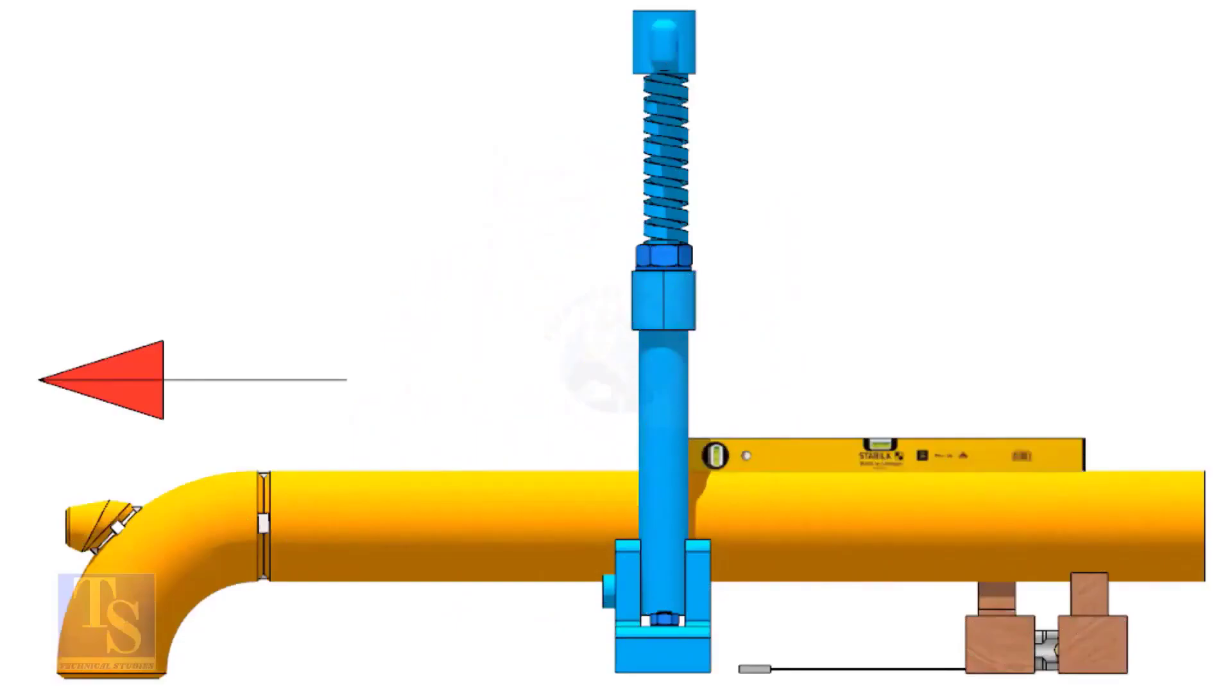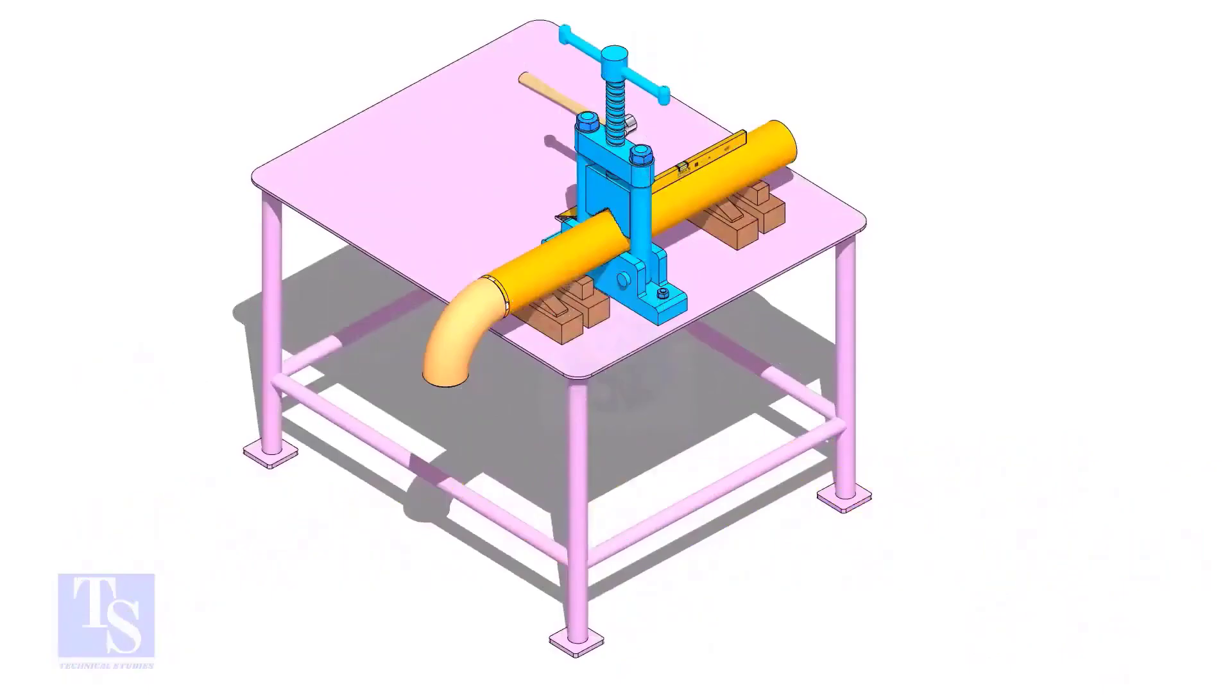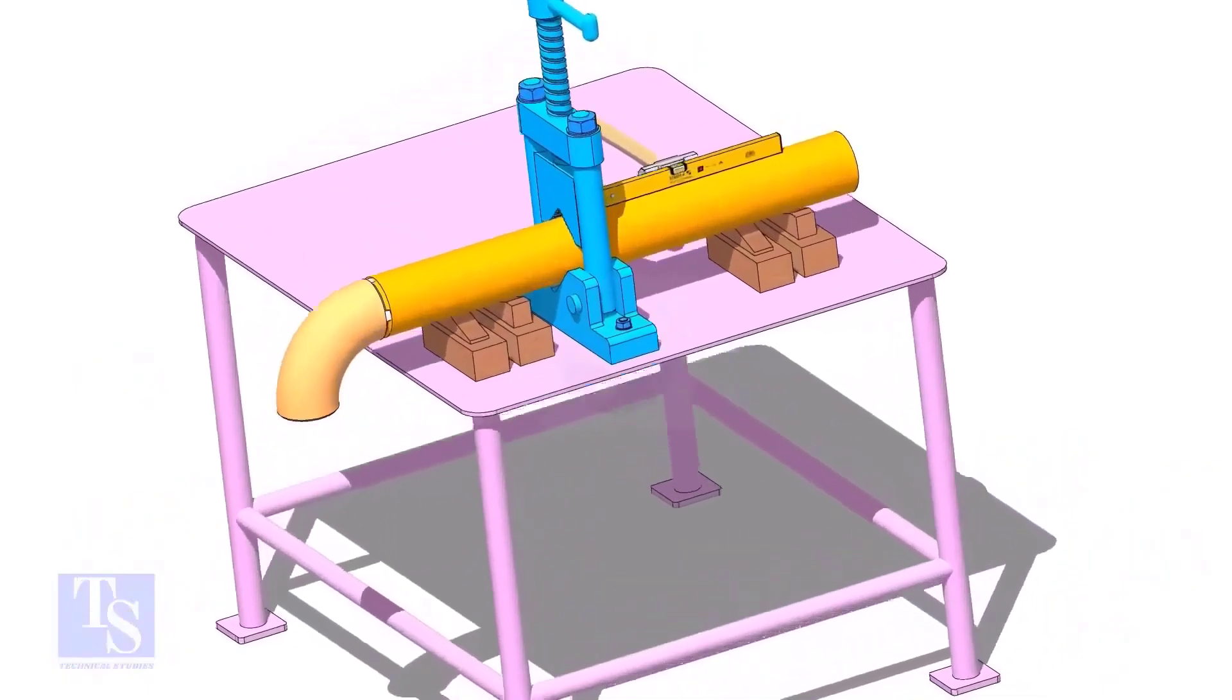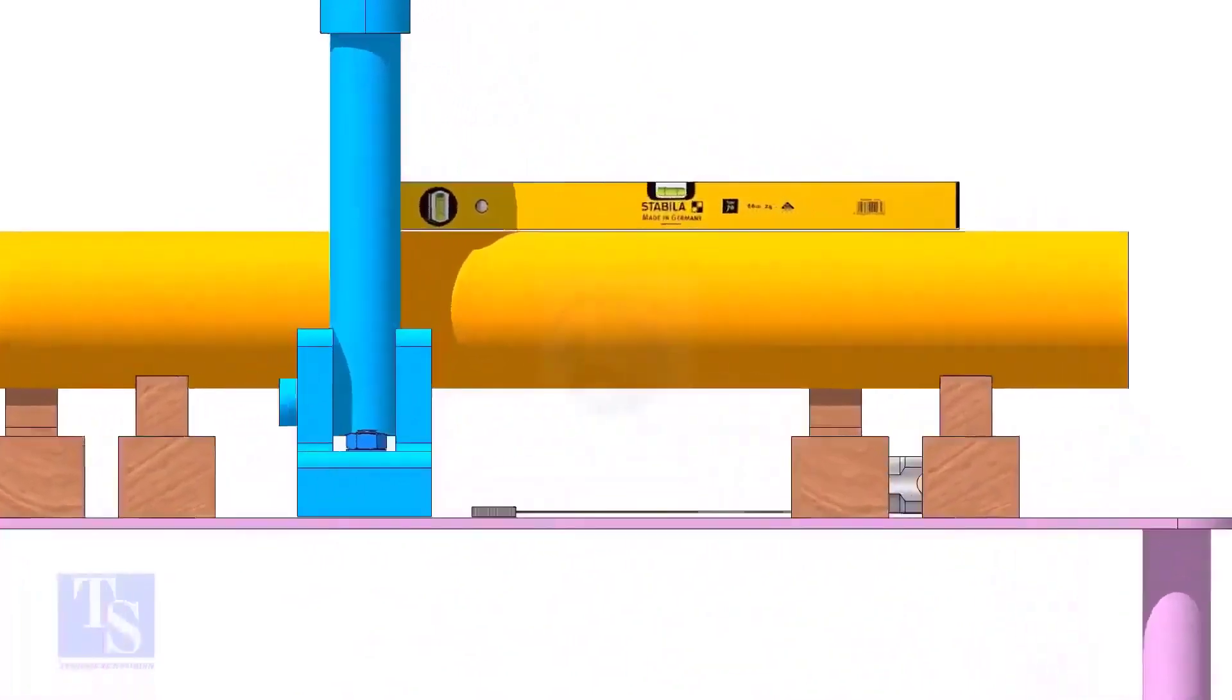I had seen guys making mistakes when they fix the direction of the elbow. Please be careful. Level the pipe and the elbow face. If necessary, put packings below the pipe.